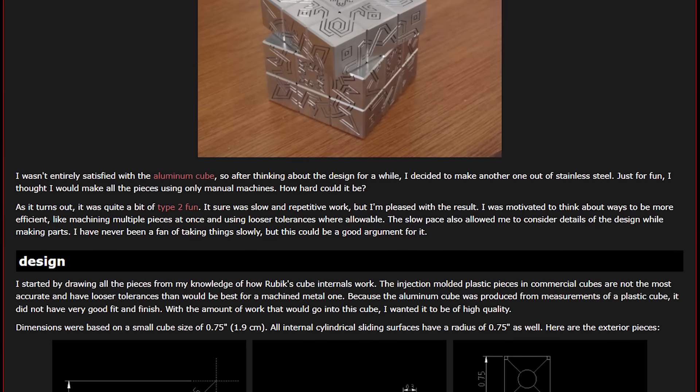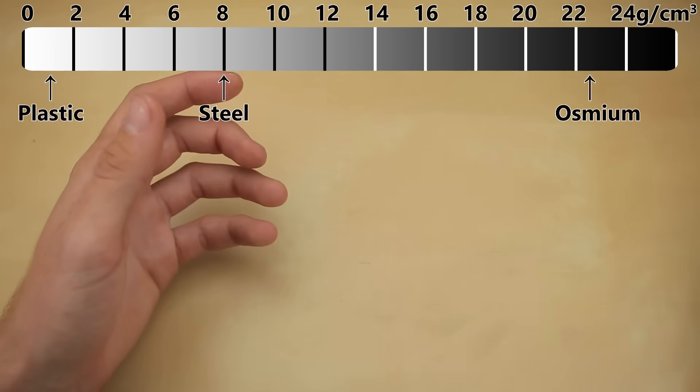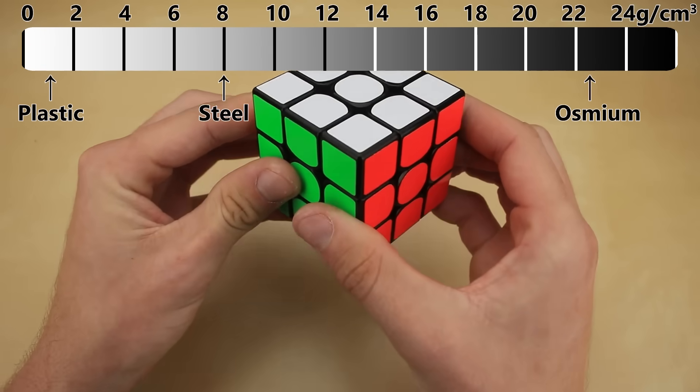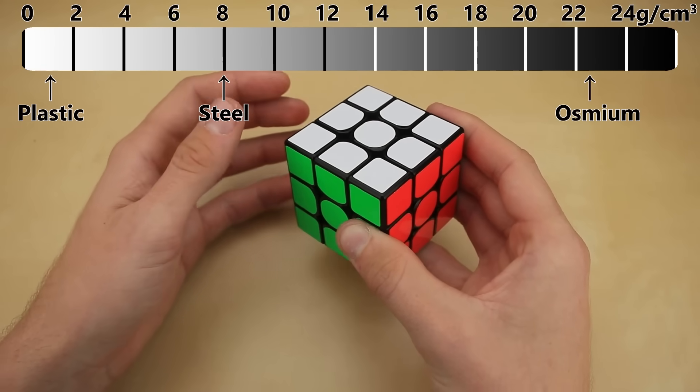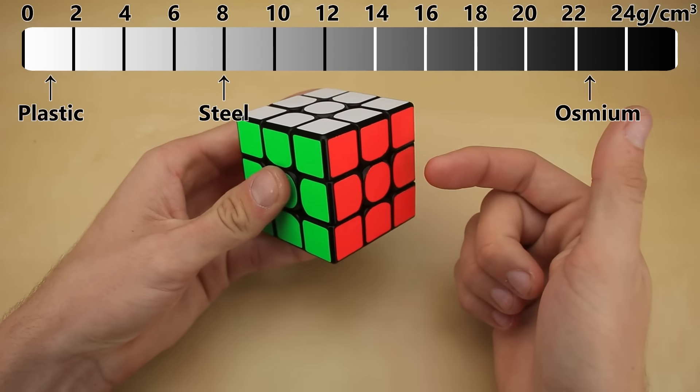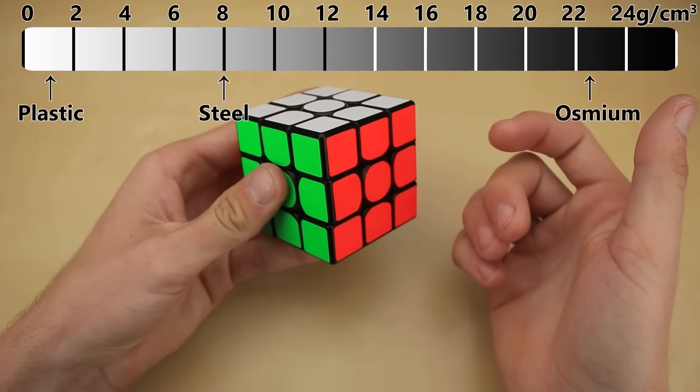There's a whole write-up about how I did it, which I'll link below. But the important part is, I was beat before I even started. So today, we're going to take that crown once and for all, by making this Rubik's Cube weigh at least 1,400 grams.